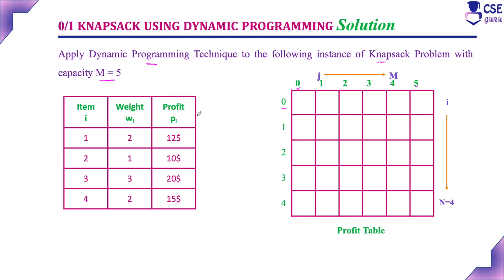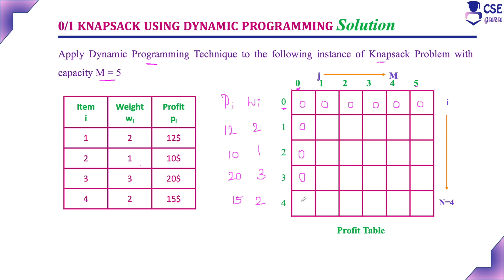Here, considering profit and weight: the first item has profit 12 and weight 2. The second item has profit 10 and weight 1. The third item has profit 20 and weight 3. The fourth item has profit 15 and weight 2. When i value equals 0 and j value equals 0, meaning the capacity is also 0, there are no items to include, so the profit is also 0. The complete first row and column we fill with profit 0 by default.